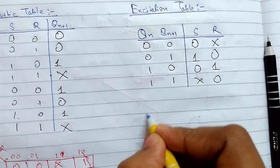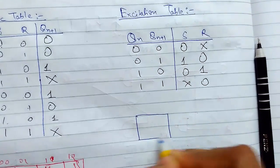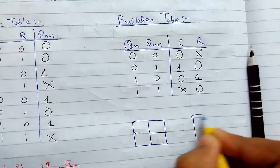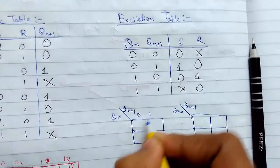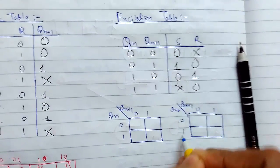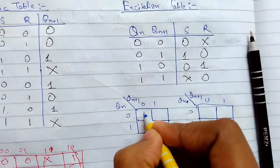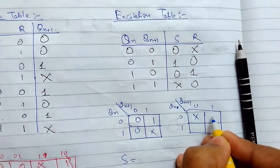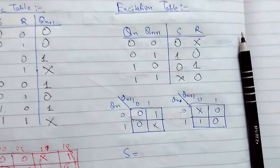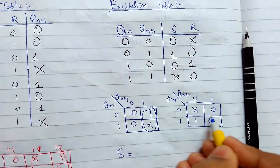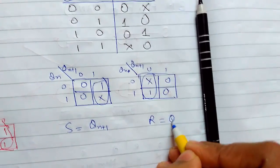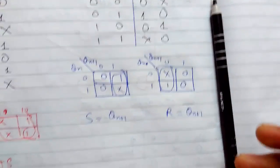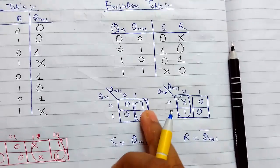Similarly, we can obtain equations for the excitation table using two-variable K-maps with qn and qn+1. For S, the only grouping gives S = qn+1·qn̄. For R, the only grouping gives R = qn̄·qn+1̄, which simplifies to R = qn·qn+1̄. These are the logical equations for the excitation table.